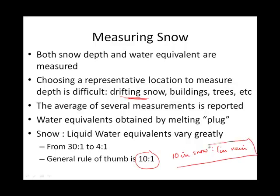That's very much a ballpark. In some cases, for every one inch of liquid water, you'd only get four inches of snow. And if the snow is really fluffy, for every one inch of rain you would get 30 inches of snow. So the 10-to-1 ratio is a rough midpoint of a wide range.